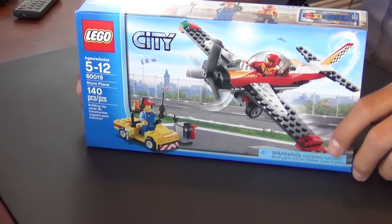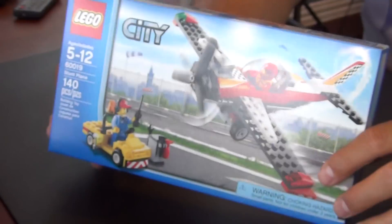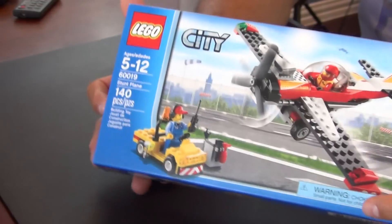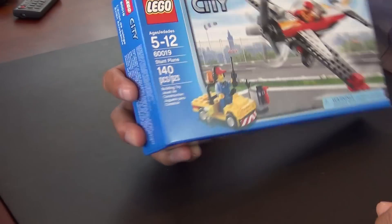Hey everyone, welcome back to String Cheese and Applesauce where we're doing another live build today. Today it's the City set, the Stunt Plane. 140 pieces, set number 60019.